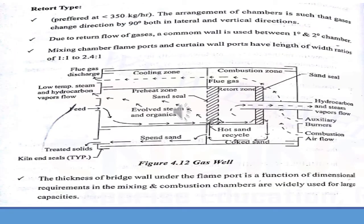The next type is the prototype or hydro type, which has a capacity of less than 350 kg per hour. The arrangement of chambers is such that gases change direction by 90 degrees, both in lateral and vertical directions. A common wall is used between the primary and secondary chambers to enable return flow of gases. Mixing of gases takes place at a ratio of 1:1 to 0.4:1, and the thickness of the wall determines the mixing and compression capacity.